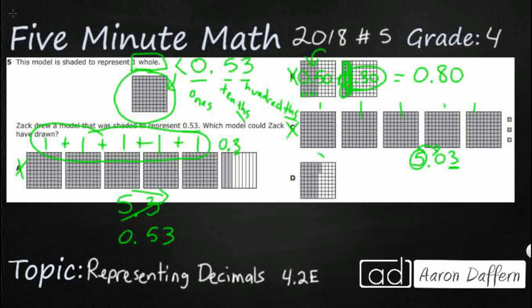D is less than a whole. This is that same diagram we have right here, but it's less than a whole because we have some shaded in and some not. Let's count what we've got: 10, 20, 30, 40, 50 — there we go — 51, 52, 53. So there's our 53 hundredths. It's less than that one whole. Our answer is D.